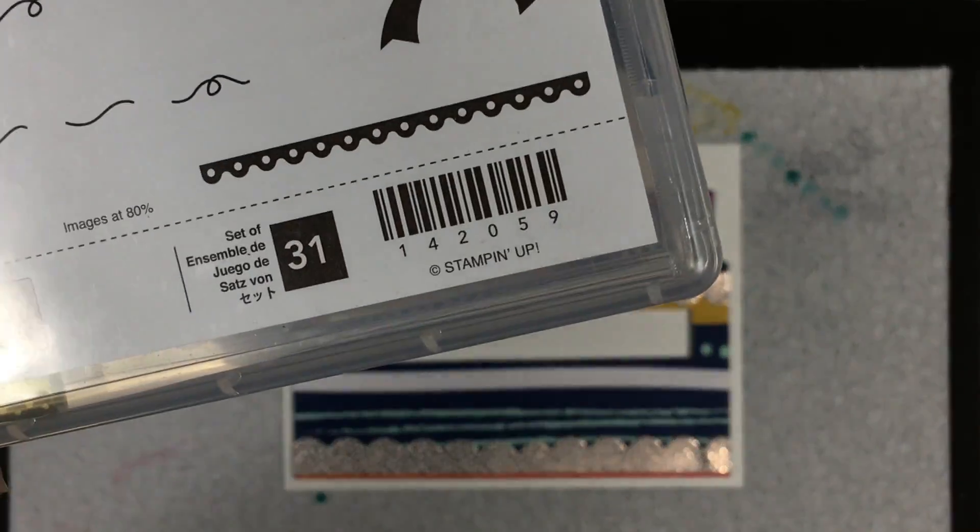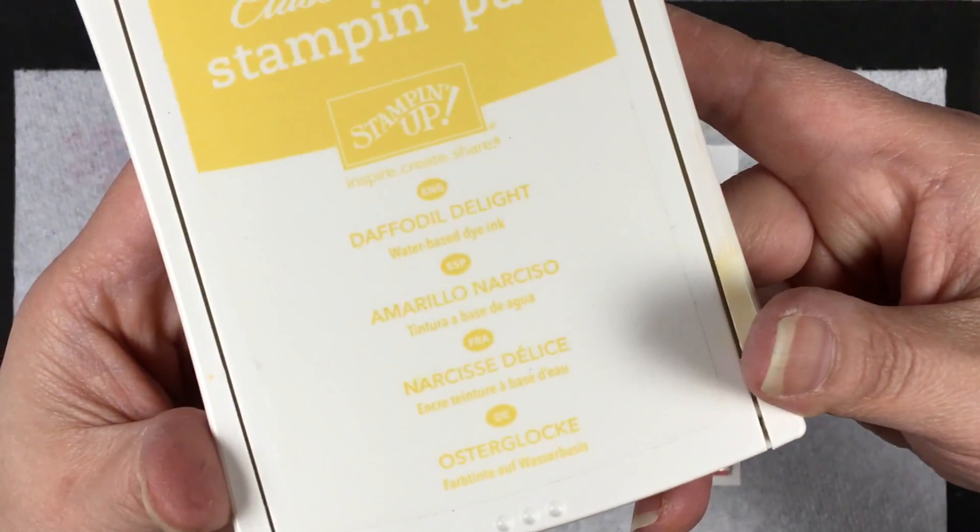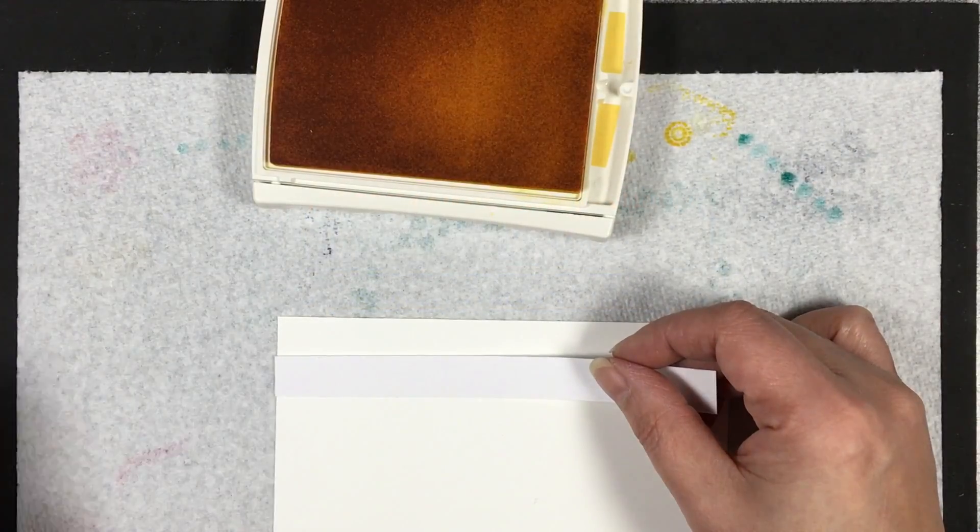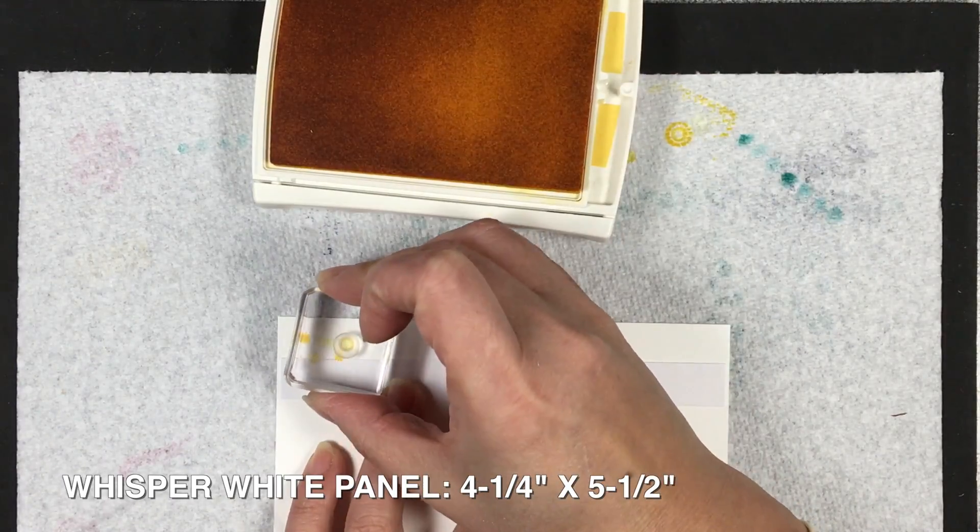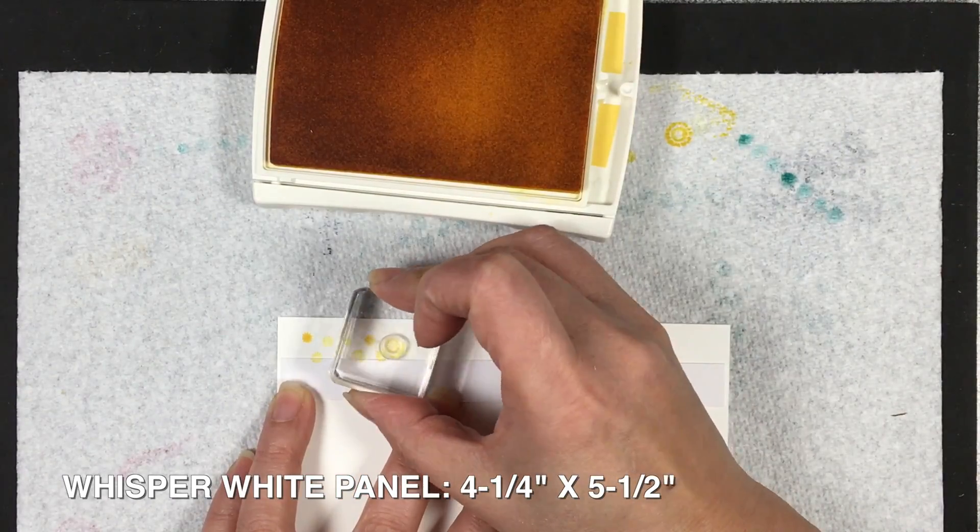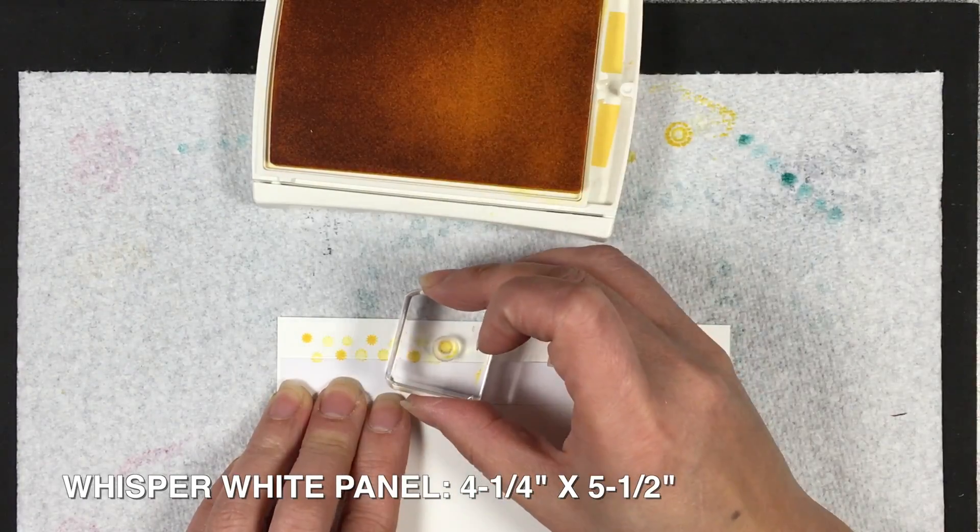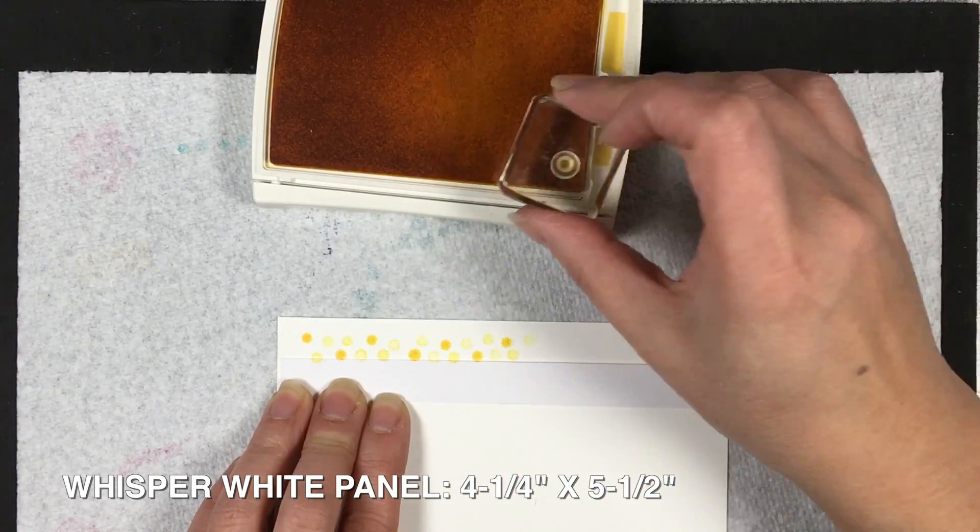I'm going to use that tiny little sunburst from the Shake and Celebrate stamp set, which I believe is retired now. I'm hoping that it'll give off an illusion of flickering candle lights. The white cardstock I'm using is Whisper White at four and a quarter by five and a half inches.